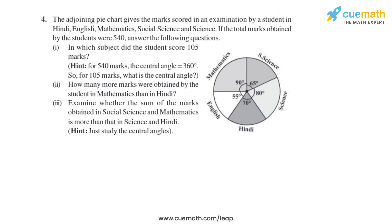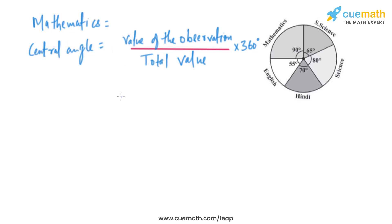Question 4 of this exercise says that the given pie chart shows the marks scored in an examination by a student in Hindi, English, Mathematics, Social Science, and Science. If the total marks obtained by the student were 540, answer the following questions. The first part asks: in which subject did the student score 105 marks? Let's find the marks scored in all the subjects. The central angle is given and the total marks is 540.